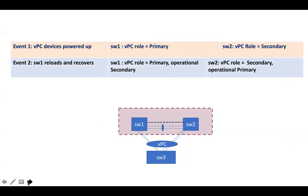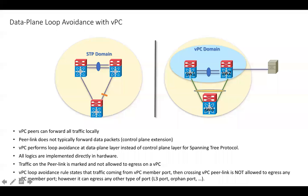Operational roles are driven by real-time events. For example, if Switch 1 went down and came back — or was reloaded — Switch 2 will take the operational primary role. Once Switch 1 comes back, it will be elected as operational secondary. This is how operational roles work in a VPC environment.